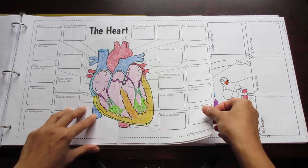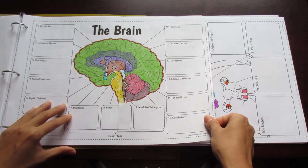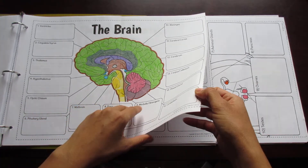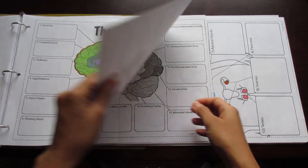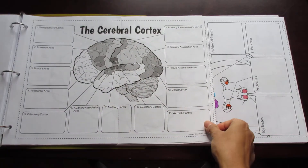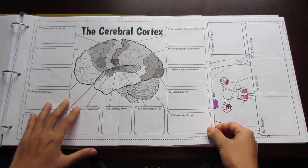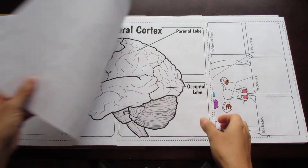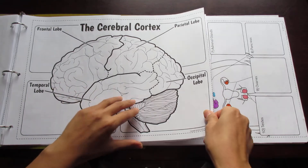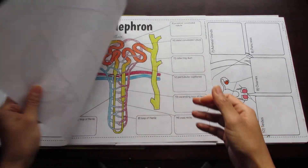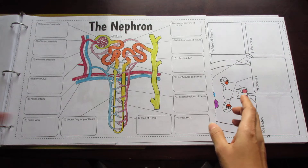Here's a two-pager and it's the heart. The brain comes as three foldables in one. The first one shows the cross-section of the internal structures — two pages. Then we have the cerebral cortex with the different cortical areas and association areas. Then there's a really big one with the three major lobes of the cerebral cortex. All three of those come in the one brain foldable product.